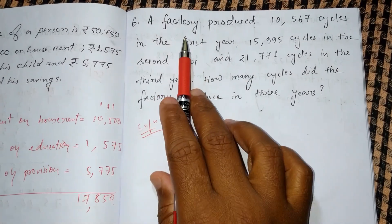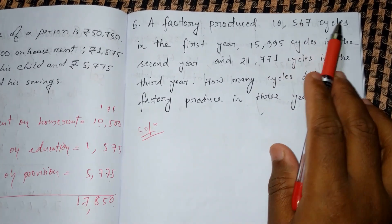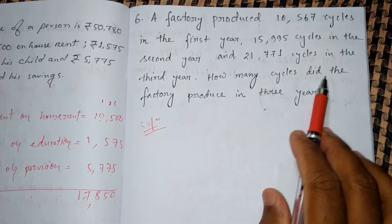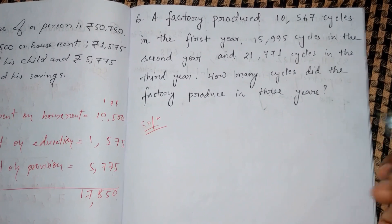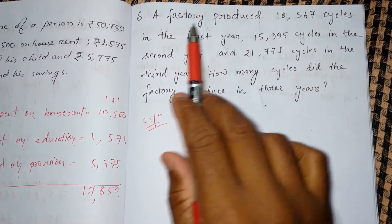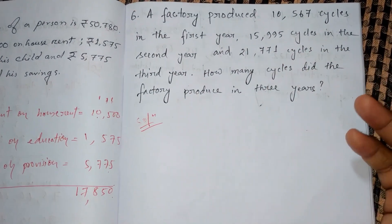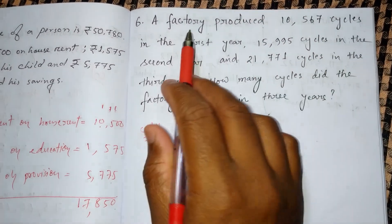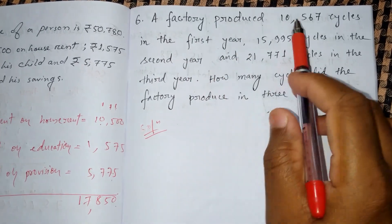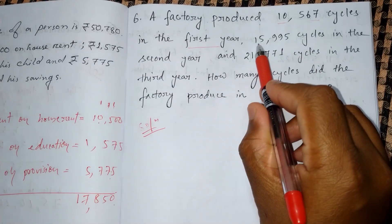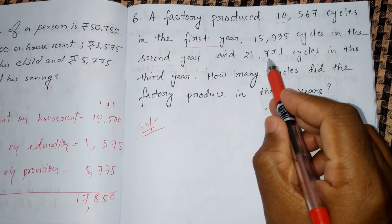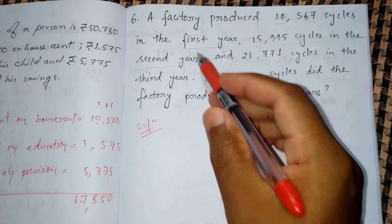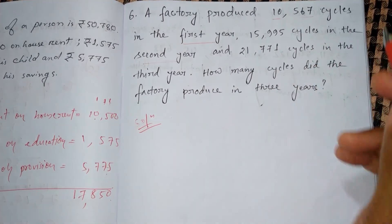Question six says: a factory produced 10,567 cycles in the first year, 15,995 cycles in the second year, and 21,771 cycles in the third year. How many cycles did the factory produce in three years? This question is very easy. It's about cycles — bicycles that you ride — and the factory produces them. You need to find the total number of cycles produced in three years, so you need to add the three numbers.